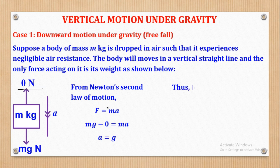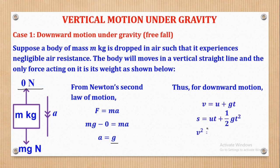The equations to use for downward motion will be obtained by replacing A with G in the equations of linear motion. The first equation will now be V equals U plus GT. The second equation will be S equals Ut plus half GT squared. And the third equation will be V squared equals U squared plus 2GS. These are the three equations which will be used for downward motion.